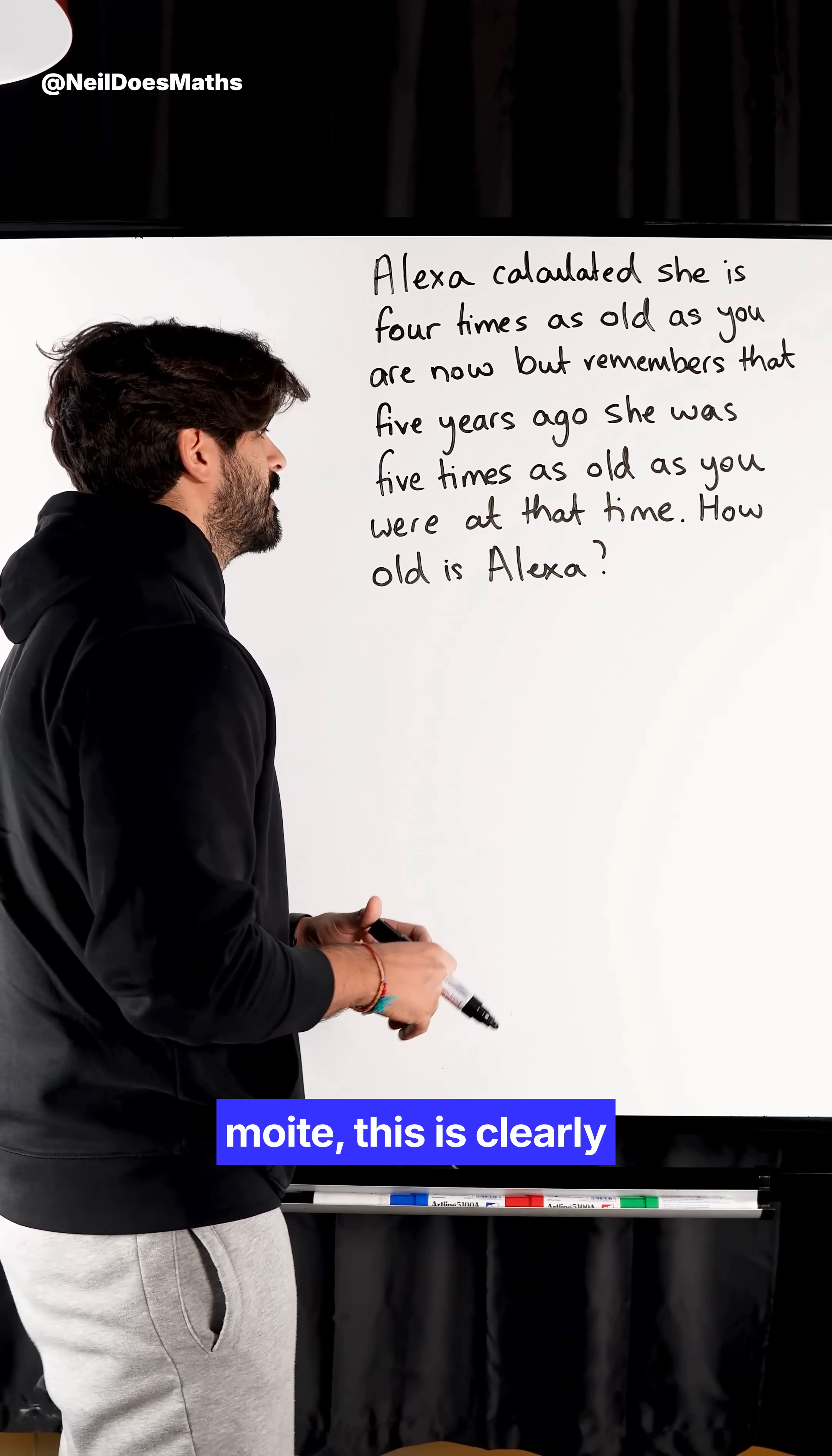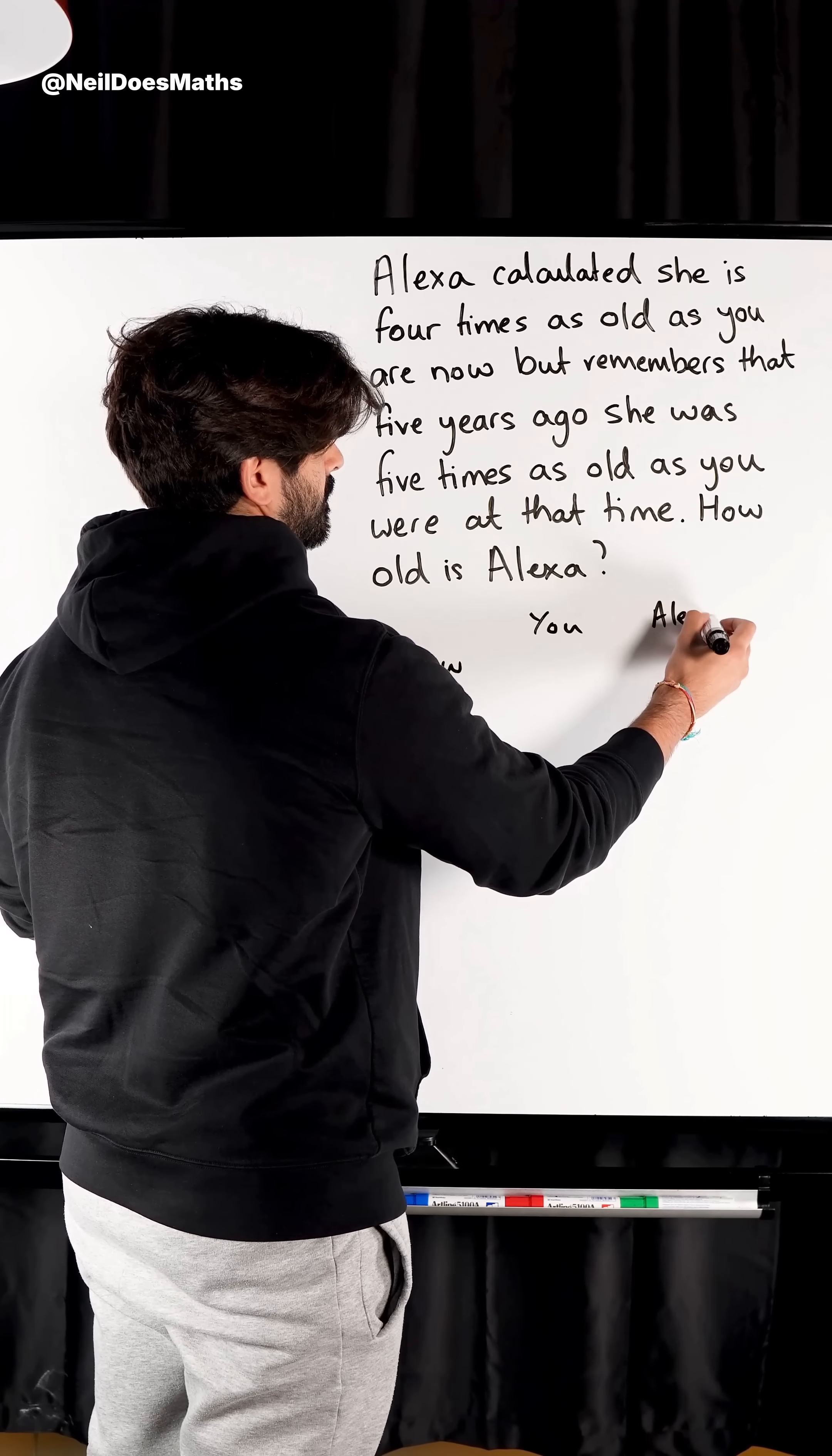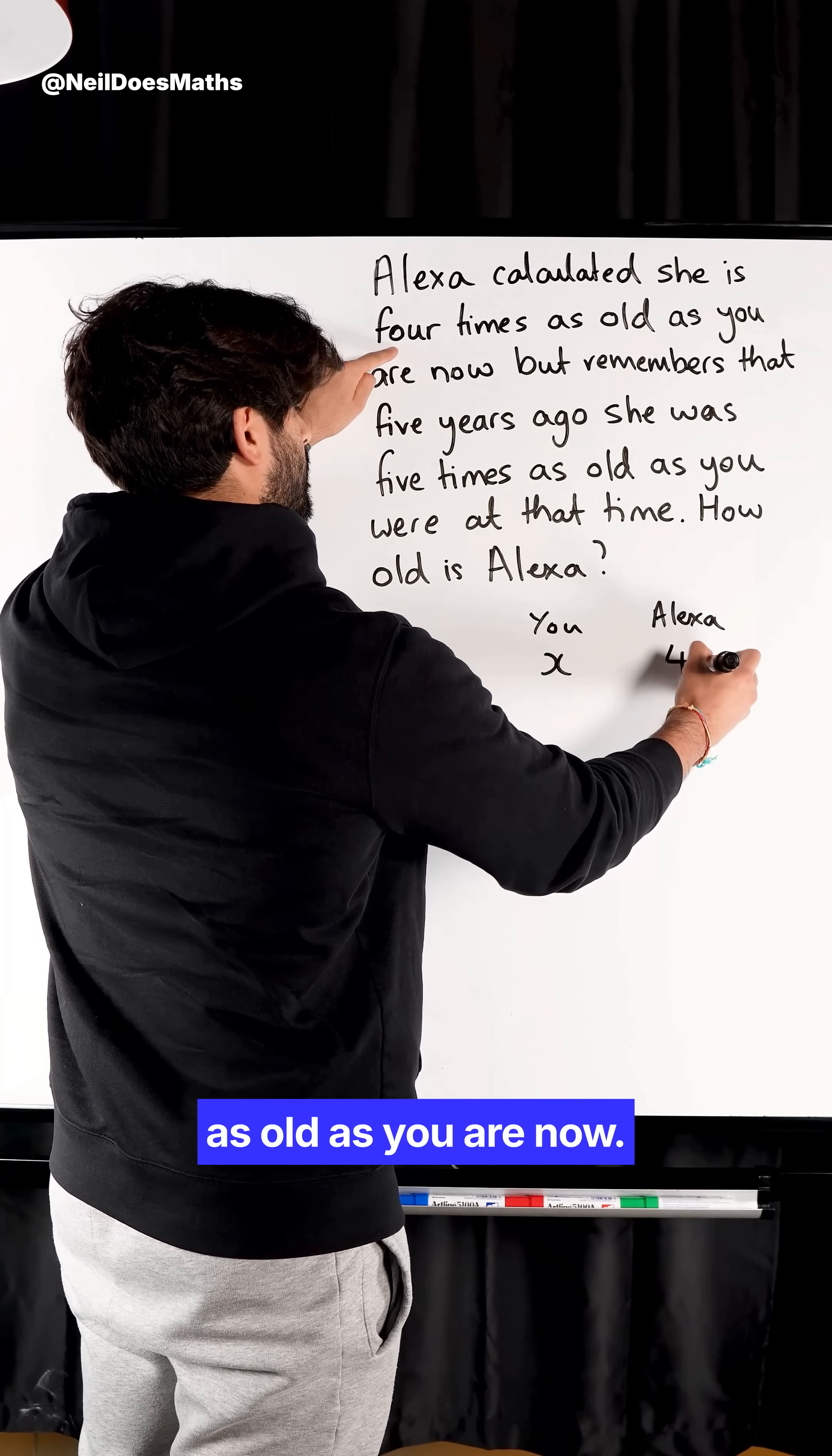Well, let's take a look. This is clearly a bit of algebra. Let's talk about now. This is you and this is Alexa. Let's say you are x years old. It says she is four times as old as you are now.